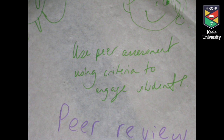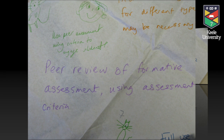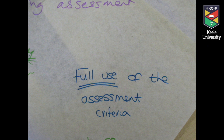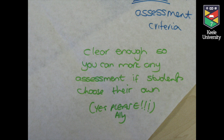There was a range of very different practices that people were doing in different disciplines about how they were using assessment criteria. In particular, what was probably striking was how many people were suggesting that students doing self-assessment and peer assessment were really critical ways of ensuring that students understood assessment criteria and had opportunities to explore them and what they meant for their learning.